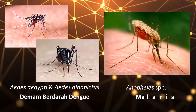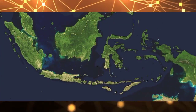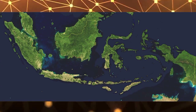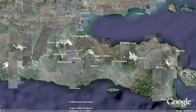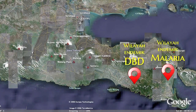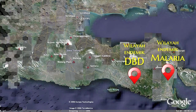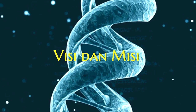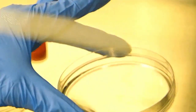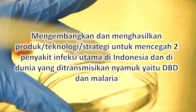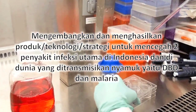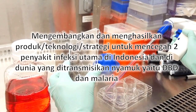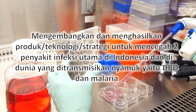DBD merupakan masalah menahun di Indonesia, sementara Jember merupakan salah satu daerah endemik DBD di Jawa Timur. Malaria ditemukan di daerah tertentu di Banyuwangi dan masih menjadi permasalahan kesehatan utama di beberapa daerah di Indonesia. Visi dan misi kelompok riset ini adalah mengembangkan dan menghasilkan produk, teknologi, atau strategi untuk mencegah dua penyakit infeksi utama yang ditransmisikan nyamuk, yaitu DBD dan malaria.